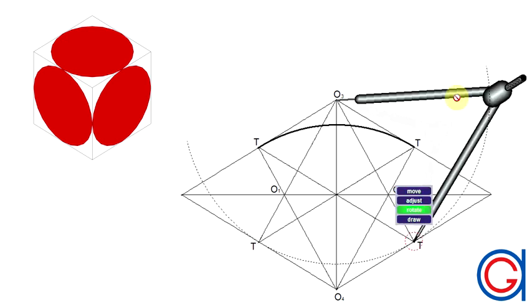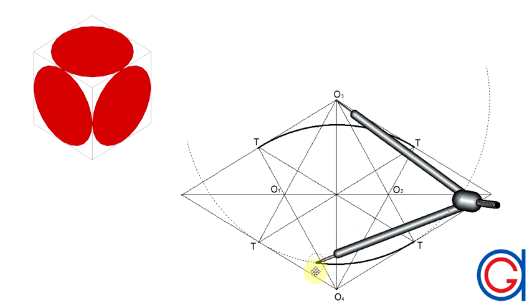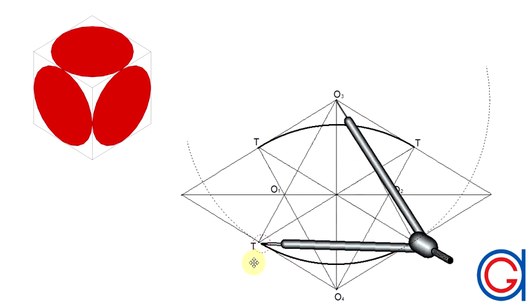And now with our compass set on point O3 we scribe an arc from our bottom right tangent point to our bottom left tangent point.